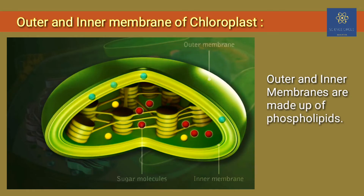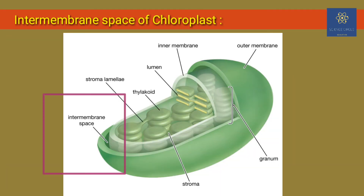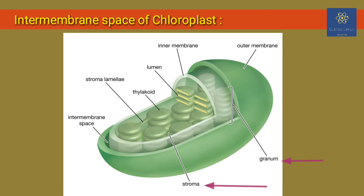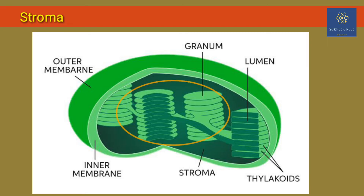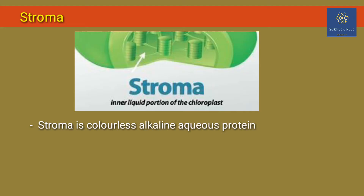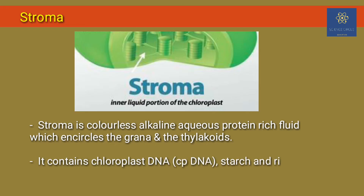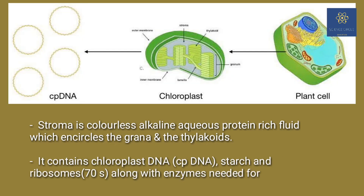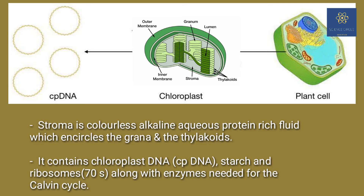Each chloroplast has two definite regions, namely stroma and grana. The space limited by the inner membrane of the chloroplast is called stroma. Stroma is a colorless, alkaline, aqueous, protein-rich fluid present within the inner membrane of the chloroplast, surrounding the grana. It also contains enzymes required for the synthesis of carbohydrates and proteins, as well as small double-stranded circular DNA molecules and ribosomes.